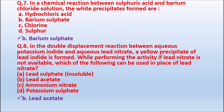Question 7: In a chemical reaction between sulfuric acid and barium chloride solution, the white precipitate formed is — Option A: Hydrochloric acid. Option B: Barium sulfate. Option C: Chlorine. Option D: Sulfur. When barium chloride reacts with sulfuric acid, it gives a white precipitate of barium sulfate. The correct answer is barium sulfate.